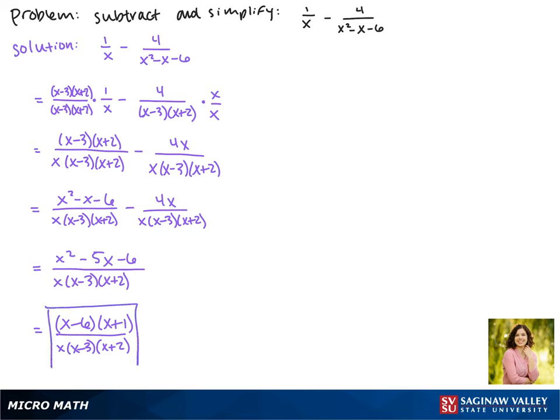We could leave our answer in this form where everything is factored or we can distribute everything. That numerator will give us an x squared minus 5x minus 6. And in the denominator you can take this in steps foiling out the binomials first. Our final distributed answer is x squared minus 5x minus 6 over x cubed minus x squared minus 6x.